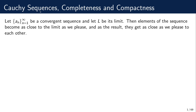Let us start with the notion of Cauchy sequences and motivate their definition. Suppose that we have a convergent sequence of real numbers, and suppose that this sequence converges to a limit L. The definition of the sequence limit says that the elements of the sequence can be as close to the limit as we please. And as a result, those elements are also getting close to each other.